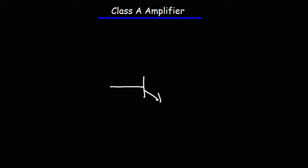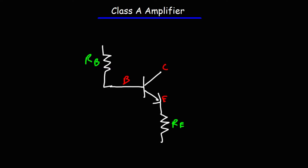Let's draw the circuit for the class A amplifier. We're going to start with an NPN transistor. This is the base of the transistor, that's the collector, and this is the emitter. We're going to connect the emitter to a resistor, which we'll call RE, the emitter resistor. RB is the base resistor. And then RC, the resistor associated with the collector. RC and RB will be connected to VCC, the collector supply voltage, which will be the positive terminal of the battery.